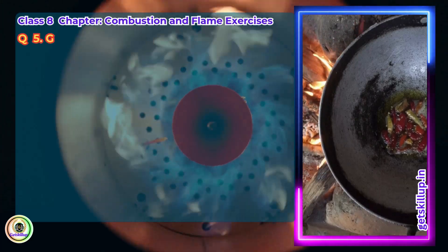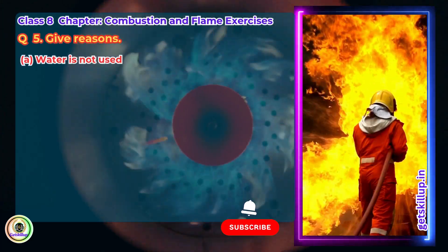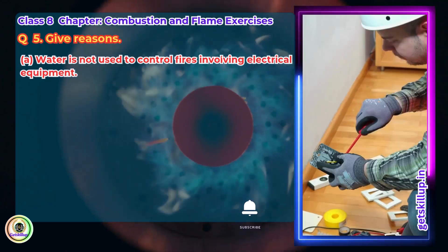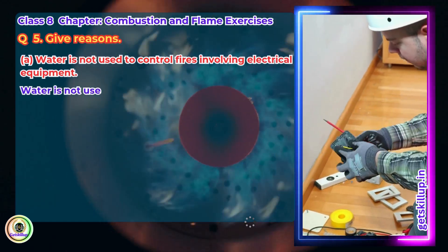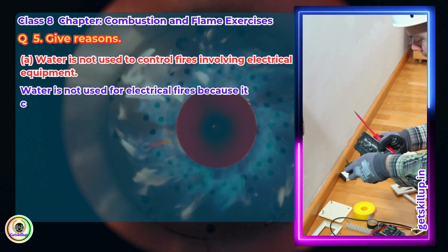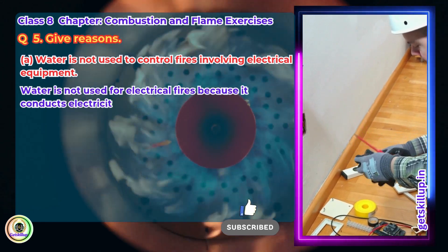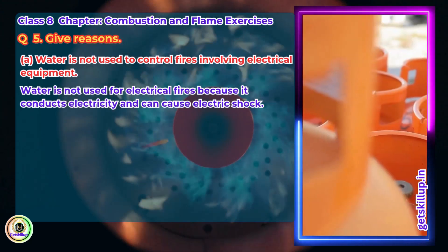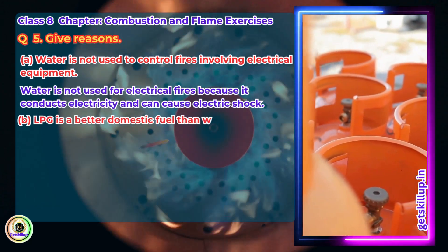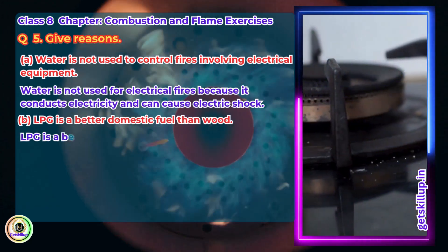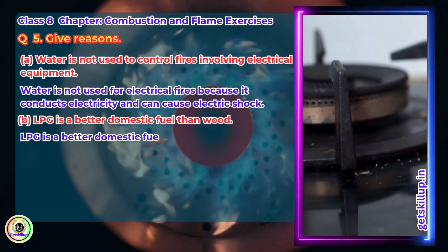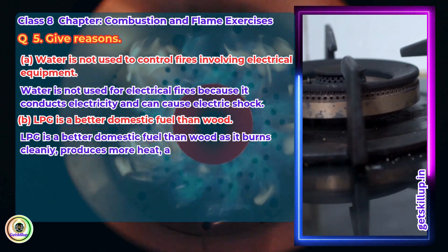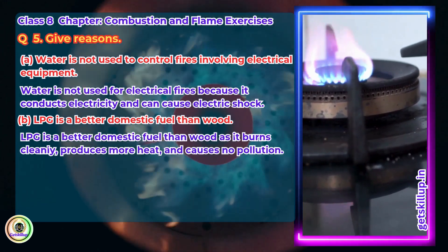Question 5: Give reasons. Water is not used to control fires involving electrical equipment. Answer: Water is not used for electrical fires because it conducts electricity and can cause electric shock. LPG is a better domestic fuel than wood. Answer: LPG burns cleanly, produces more heat, and causes no pollution.